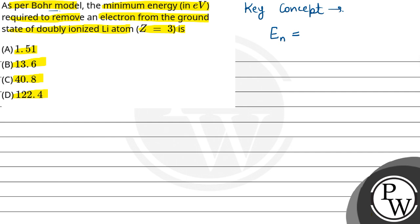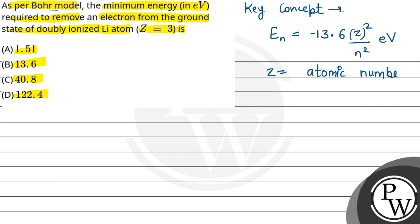According to the Bohr atomic model, the energy for the nth state is given by: Eₙ = −13.6 × Z² / n² electron volts, where 13.6 is a constant, Z is the atomic number, and n is the energy level (nth orbit).